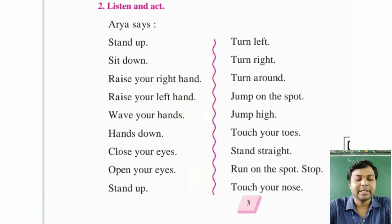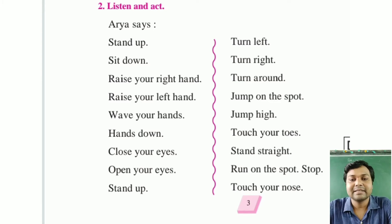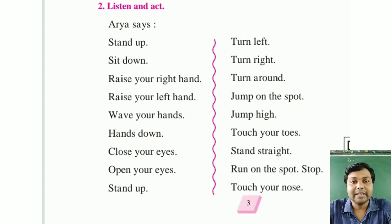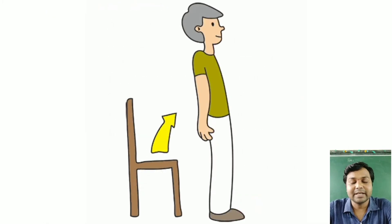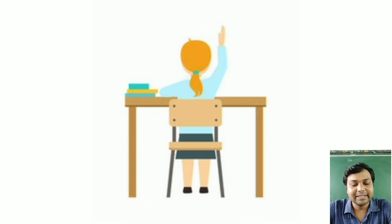Now we start activity number two — listen and act. Aria says. Ek ladki hai Aria, woh abhi bol rahi hai. Stand up — ani khaday ho jao. Sit down — sit down means beth jao.